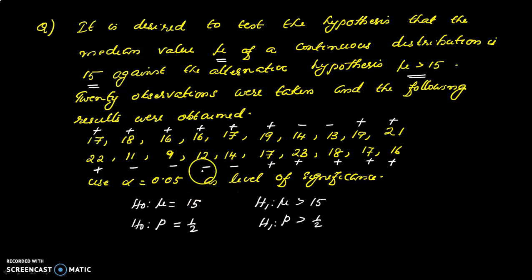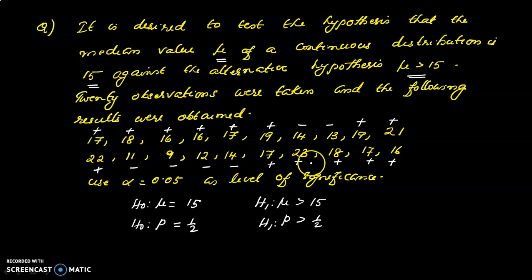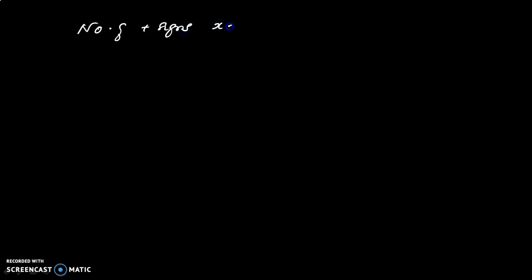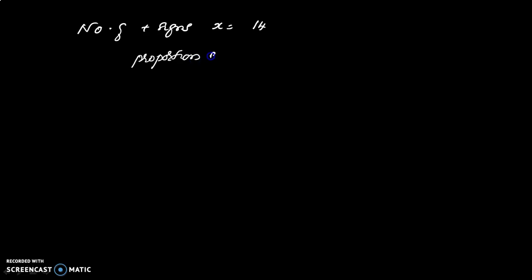We will check whether each value is greater than 15 or not, and assign plus or minus signs accordingly. Counting the plus signs: 1, 2, 3, 4, 5, 6, 7, 8, 9, 10, 11, 12, 13, 14. The number of plus signs X equals 14 out of 20 total observations.